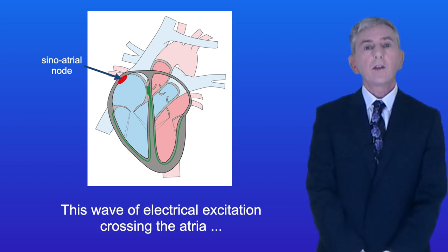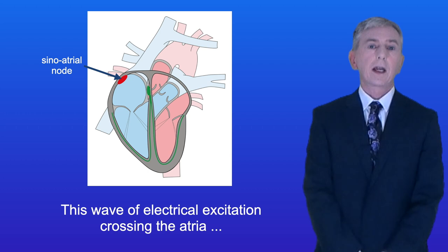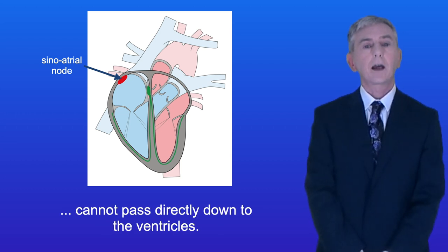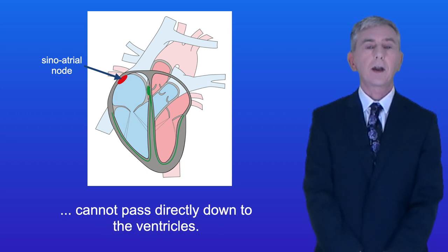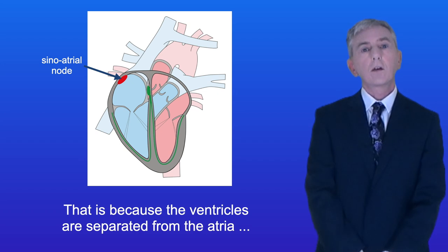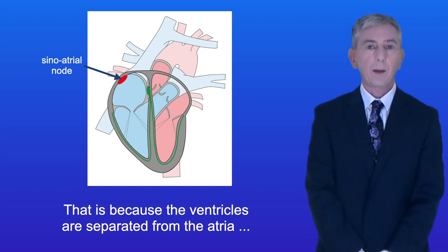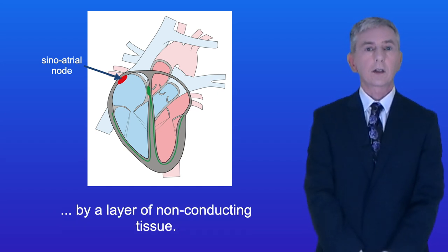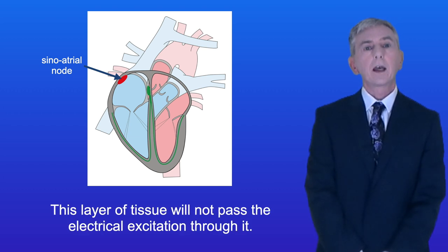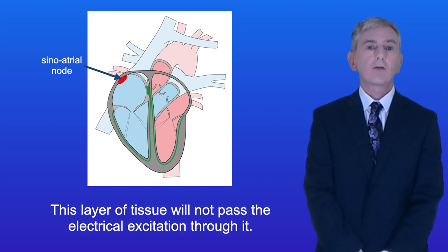This wave of electrical excitation crossing the atria cannot pass directly down to the ventricles. That's because the ventricles are separated from the atria by a layer of non-conducting tissue, and this layer of tissue will not pass the electrical excitation through it.